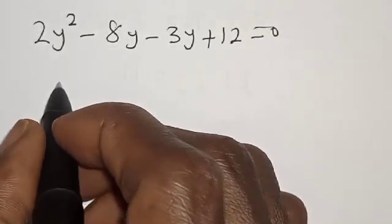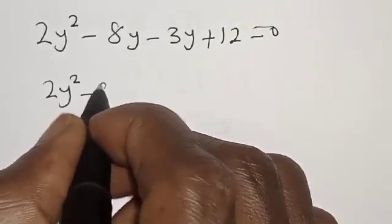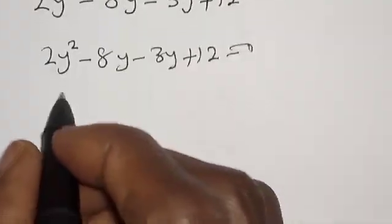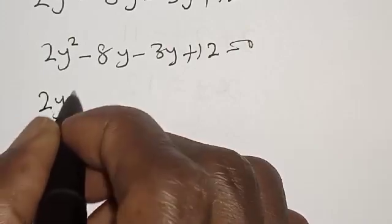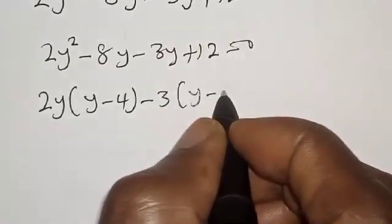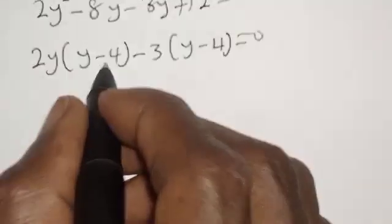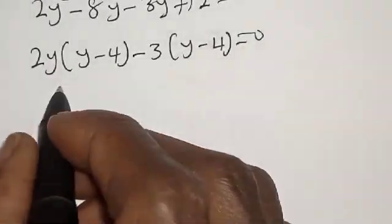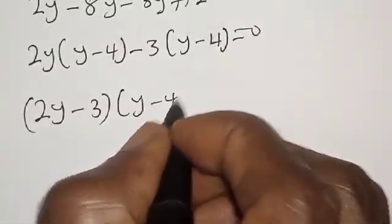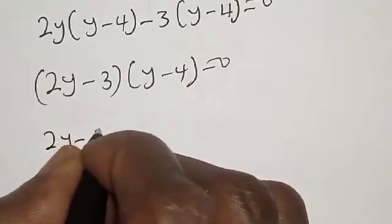Then we have 2y squared minus 8y minus 3y plus 12 is equal to 0. From here, we have 2y into y minus 4, minus 3 into y minus 4, is equal to 0. We have the common factor y minus 4, and the other factor is 2y minus 3.